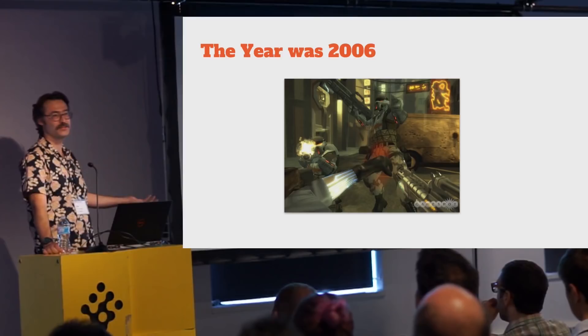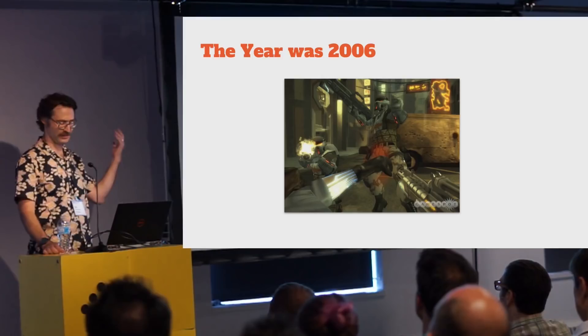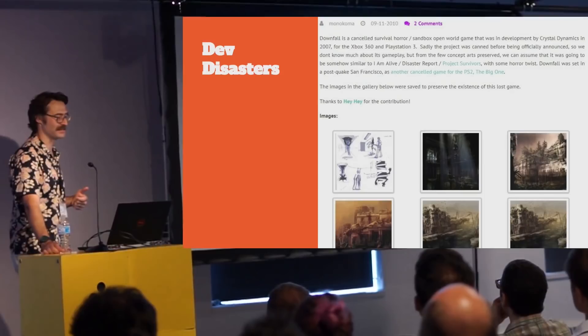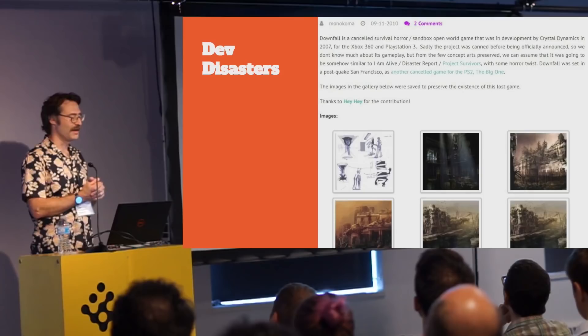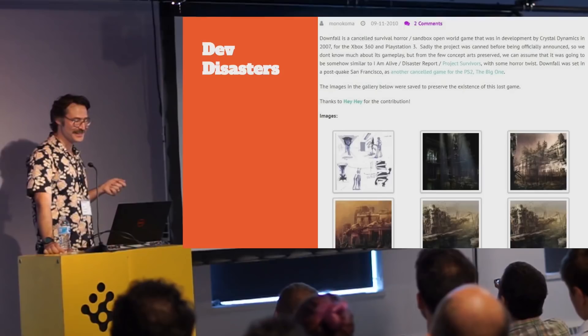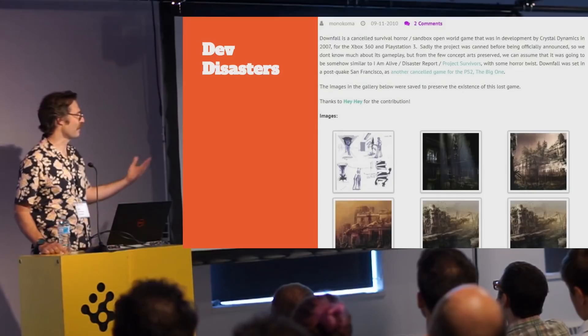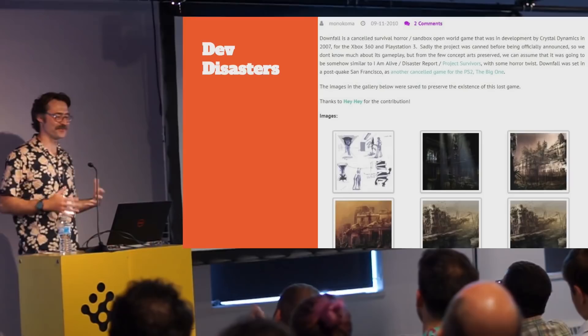Back around 2006 I was working at Crystal Dynamics and had just shipped a first-person shooter called Project Snowblind. Other people felt good about my contribution because they had me immediately start pitching giant multi-million dollar projects. Eventually I got a project approved — co-led with Lee Petty — but the thing to know about this game is that it was about big natural disasters and was itself a big giant disaster. It was called Downfall.